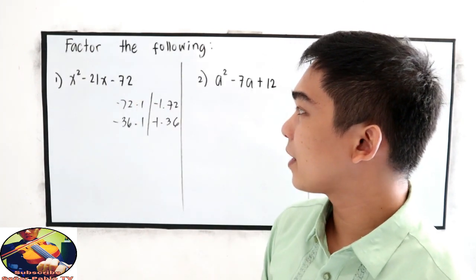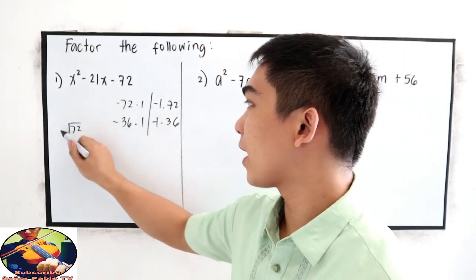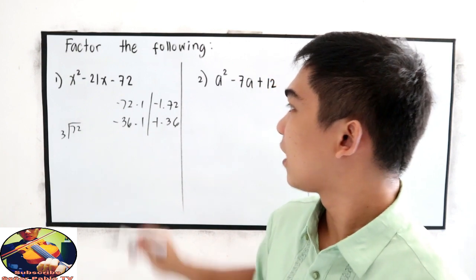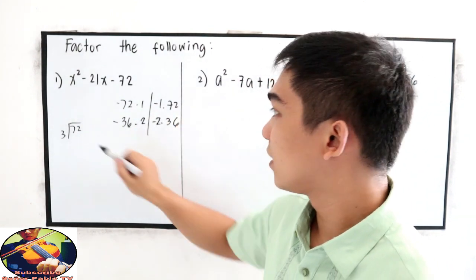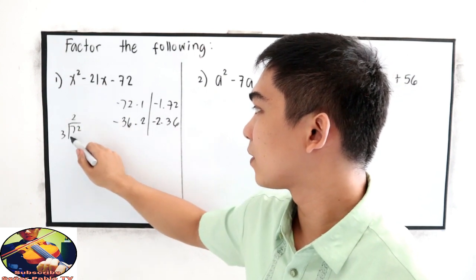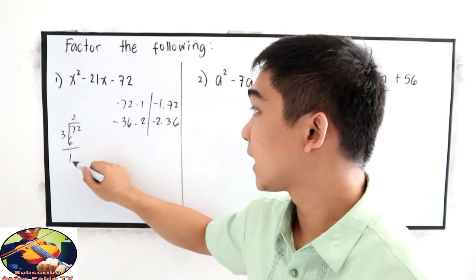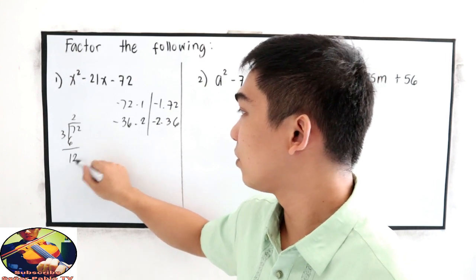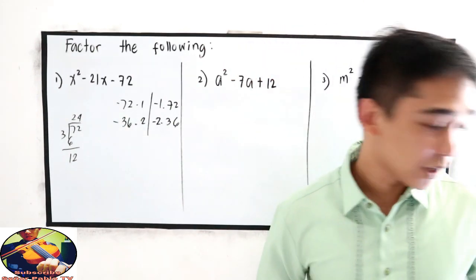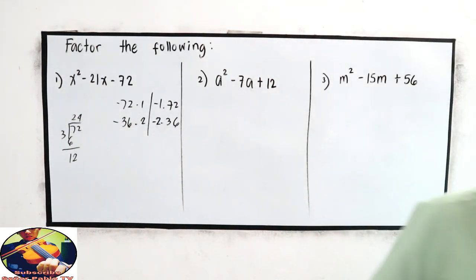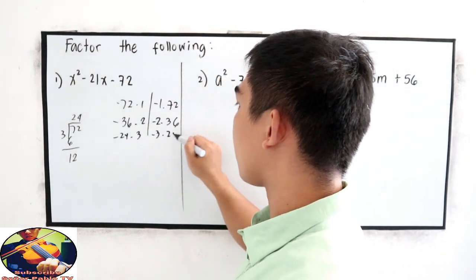72 divided by 3. 72 divided by 3. 24 times 3. It can be negative 24 times 3 or negative 3 times 24.